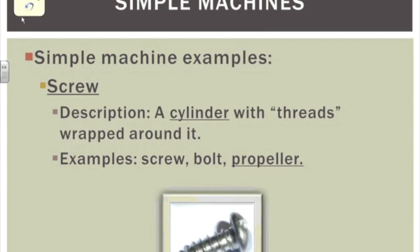A screw is a simple machine — you may not have thought about it, but a screw brings things together. You turn it and it has threads that bind, connect, and hold things together. It makes the job easier. A screw is a cylinder with threads wrapped around it, and it can also be something like a propeller off an airplane or a boat.